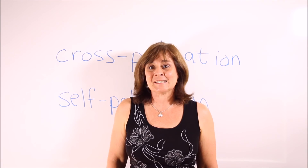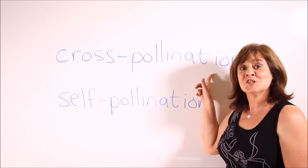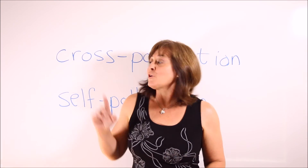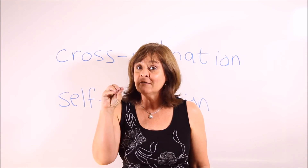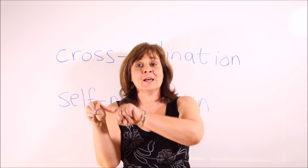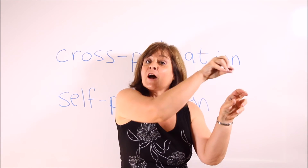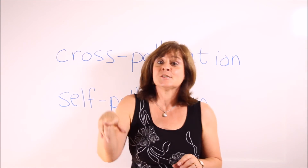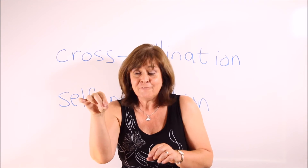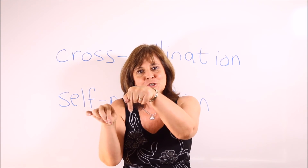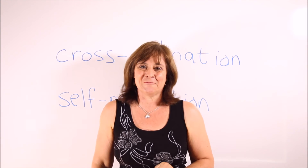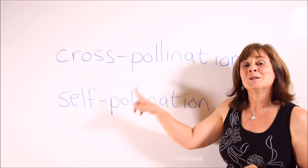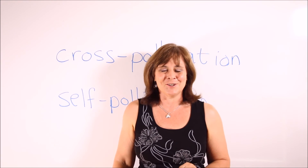Let's recap the difference between cross-pollination and self-pollination. Cross-pollination is when the pollen from the anther of one flower is transferred to the stigma of another flower. Self-pollination is when the pollen from the anther of a flower is transferred to the stigma of the same flower.